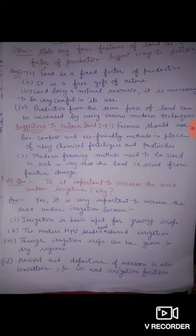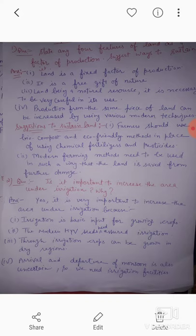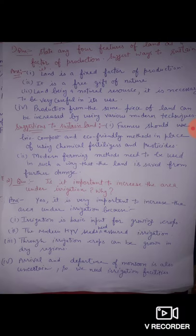Third, land being a natural resource, it is necessary to be very careful in its use, because if soil fertility is once lost it takes very much time to become usable again. Fourth, production from the same piece of land can be increased by using various modern techniques such as high yielding variety seeds or modern machinery.